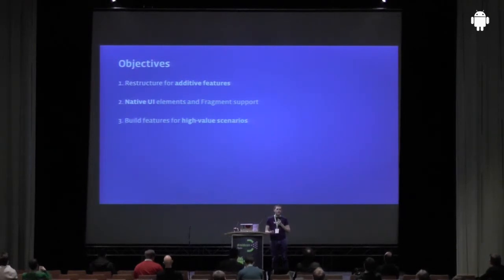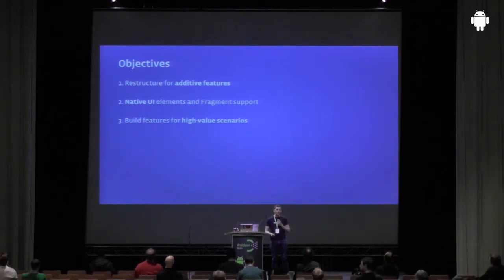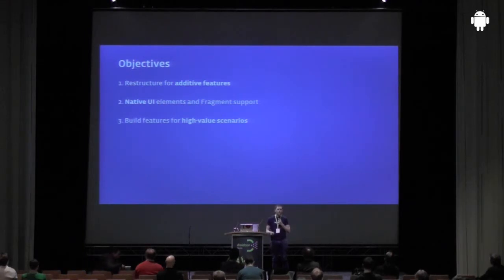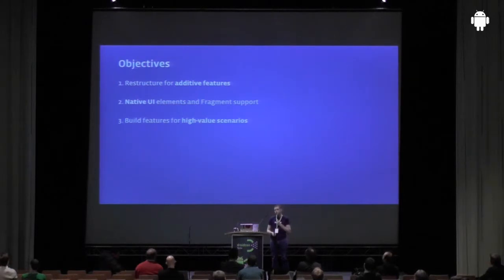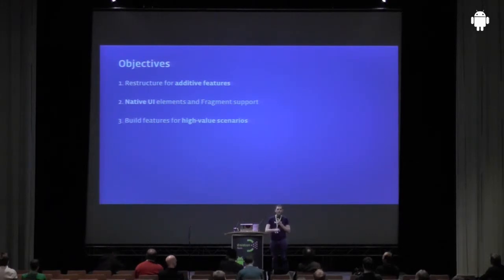The team had some objectives on how they were going to improve and modernize this SDK. They wanted to restructure the build of the SDK for additive features — so that they could add new features without interrupting the developer flow and without making massive changes to the SDK for existing developers. There are a lot of native UI elements, and support for all the fragments inside the new version of the Android app, and the SDK needed to be able to use that to its advantage.